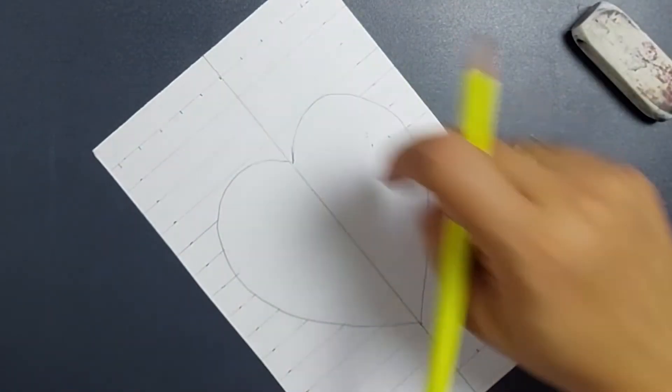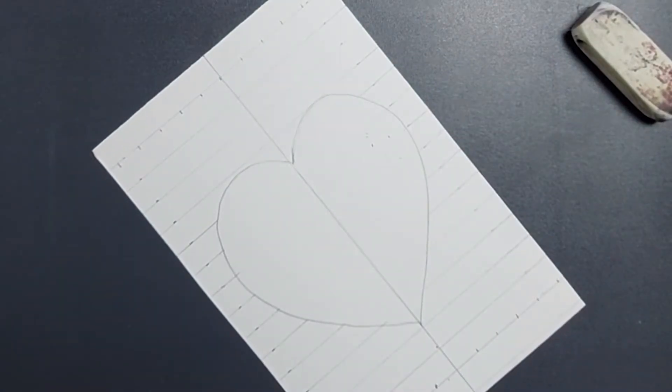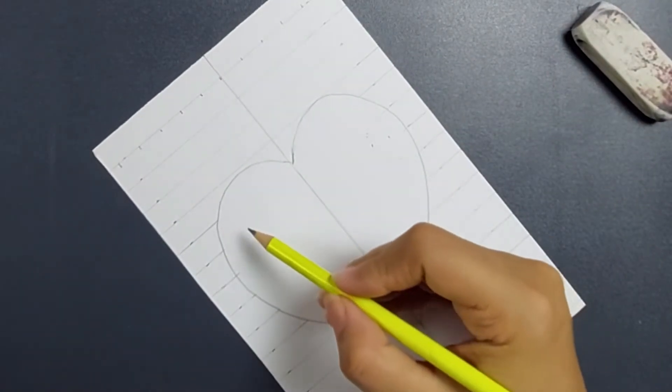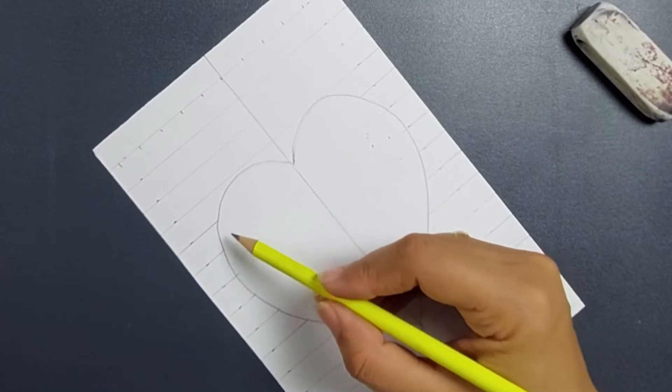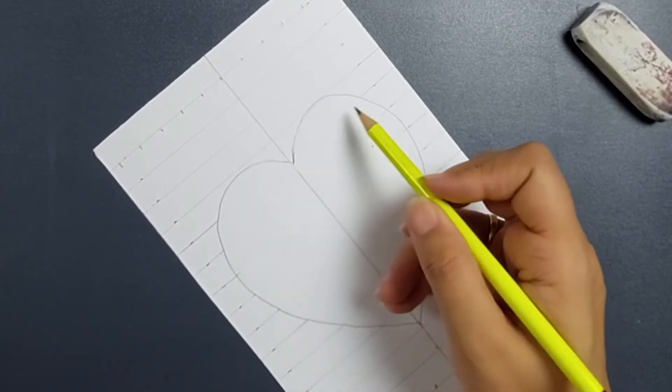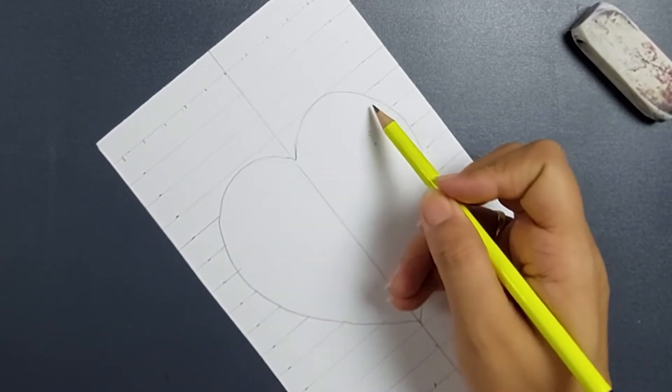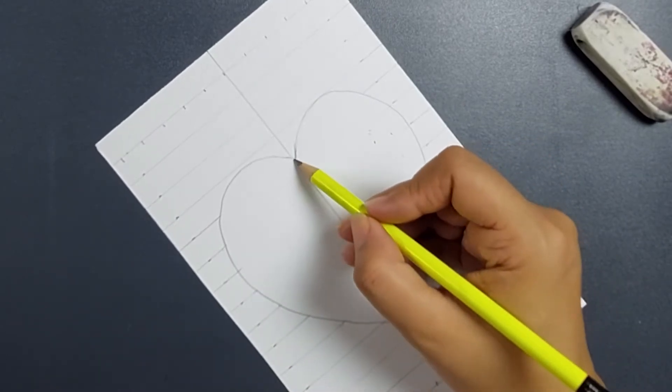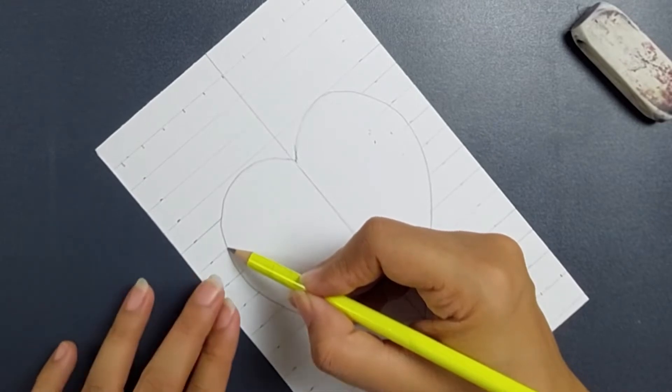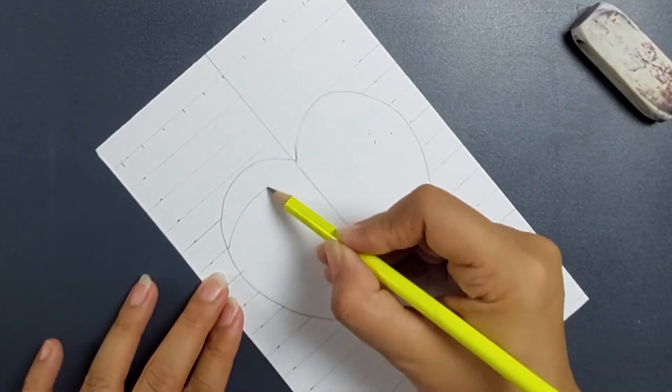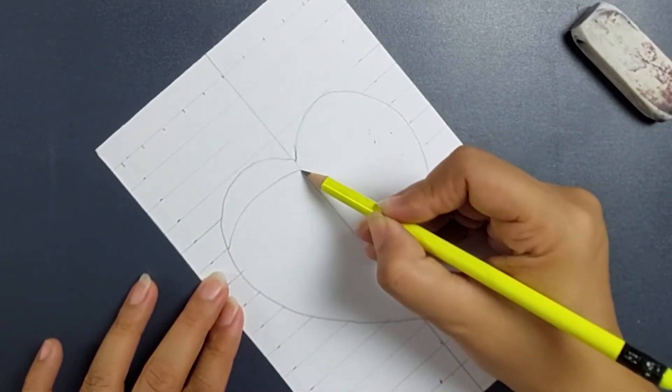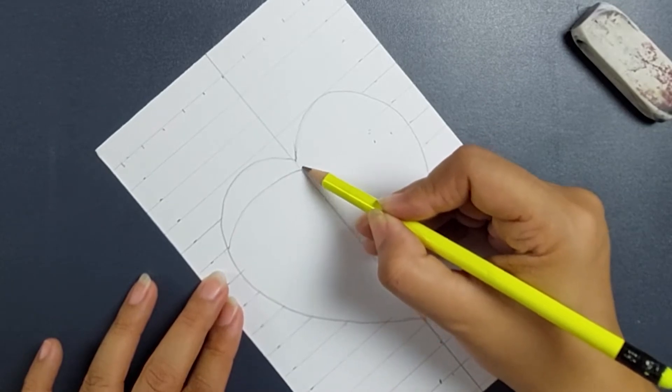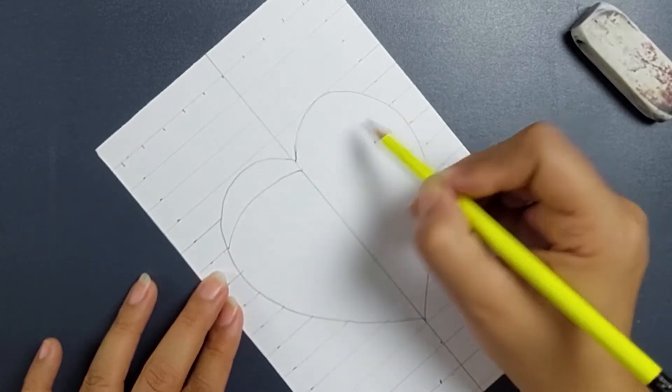Now before we make these lines, what we'll do is we will just create these lines in a curved manner. We'll just make these lines in a curved manner, we'll not make straight lines here. To start with, we have to join it on this.